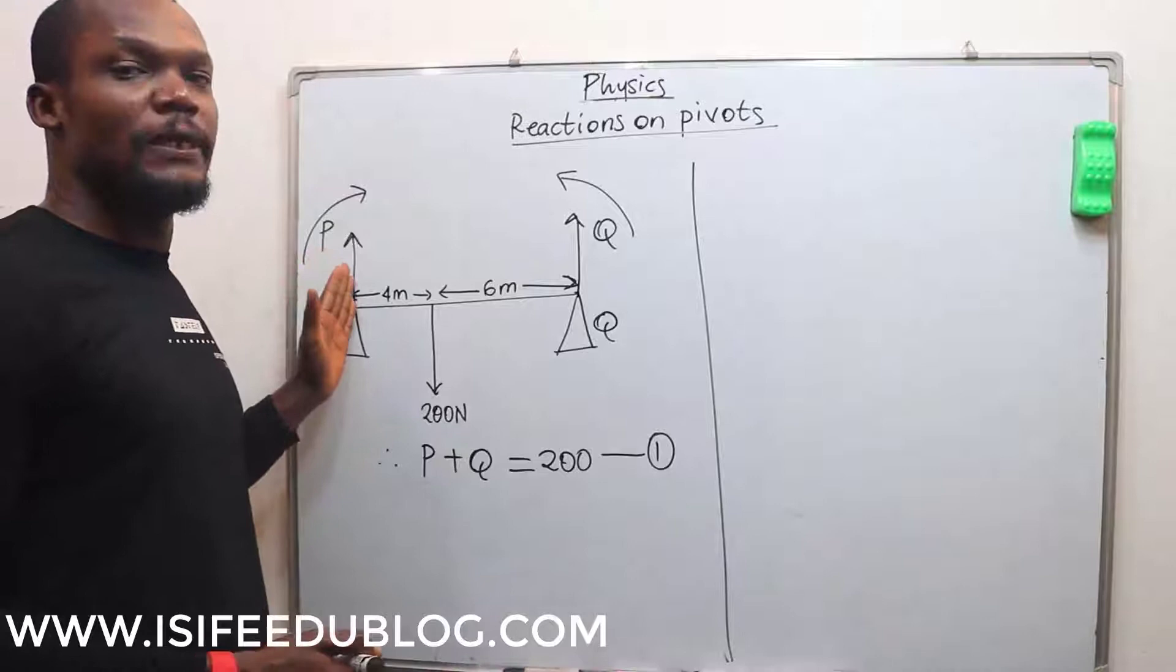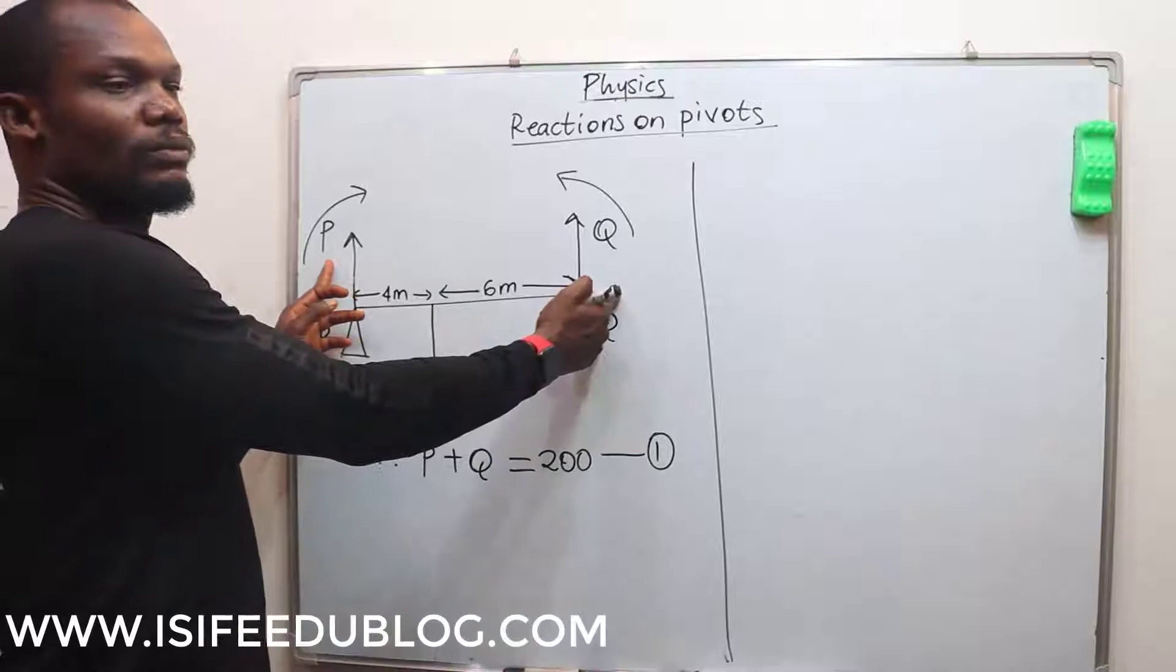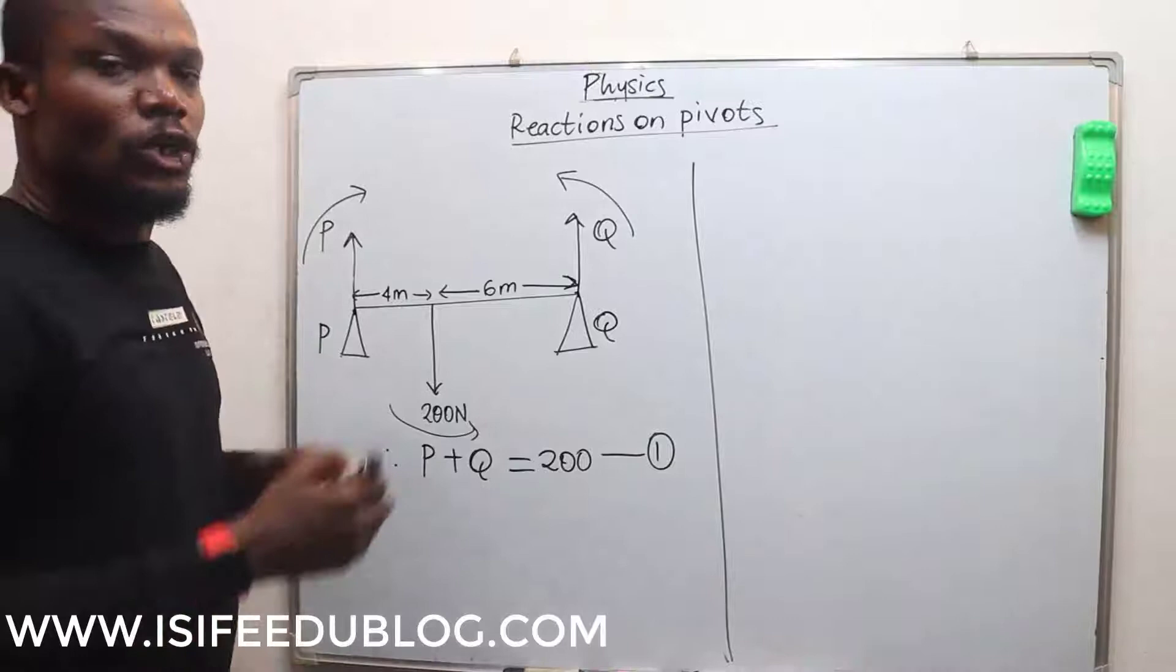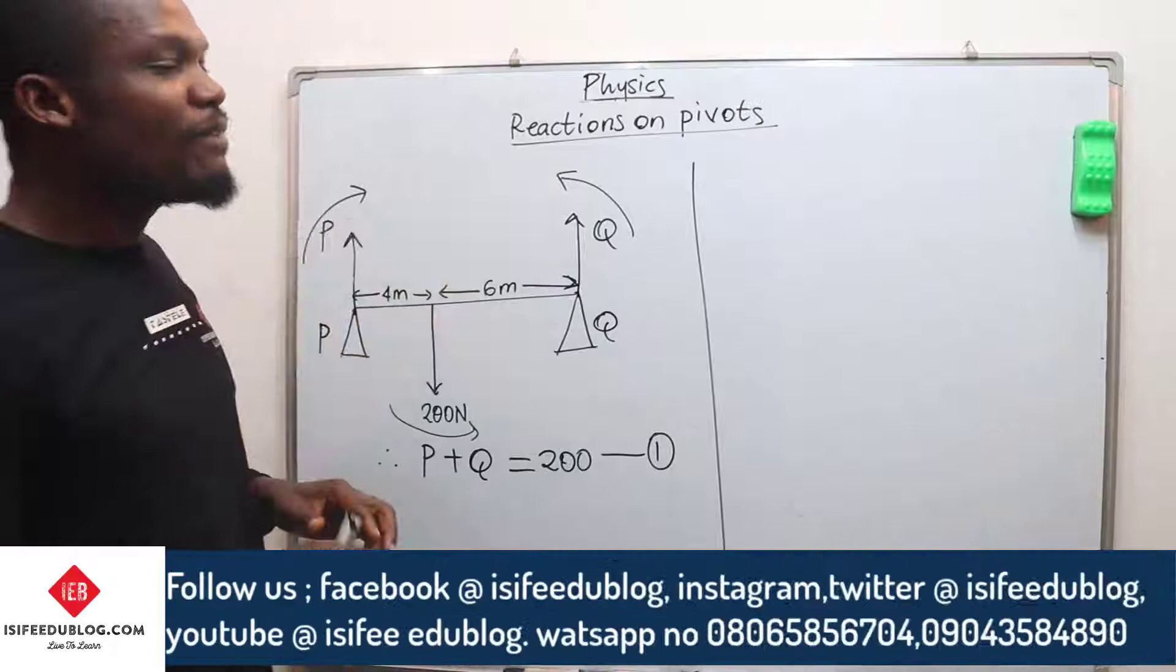If we want to determine the reaction at P, that means we are taking the moment from Q. P is going in the clockwise direction and 200 is going in the anticlockwise direction. If we are looking for the moment for the reaction at P, that means we have to imagine that Q is not here.